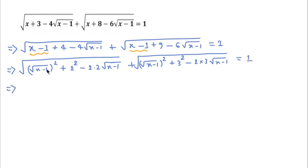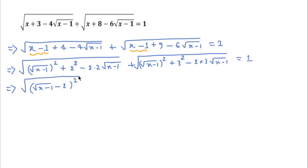Now you will see that this is in the form a² + b² − 2ab, so we can write this as (√(x−1) − 2)² under a square root. Here also, a² + b² − 2ab, so we can write (√(x−1) − 3)² under a square root, which equals 1.